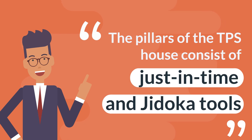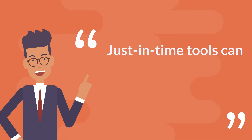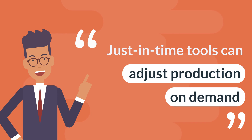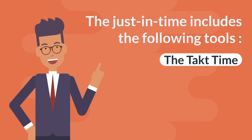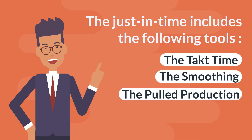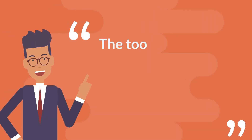The pillars of the TPS House consist of Just-in-Time and Jidoka tools. Just-in-Time tools can adjust production on demand. The Just-in-Time pillar includes the following tools: takt time, smoothing, pull production, and continuous flow.